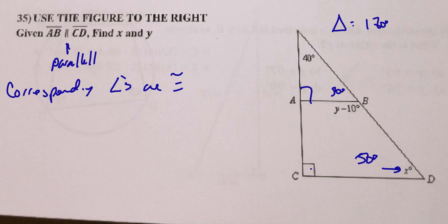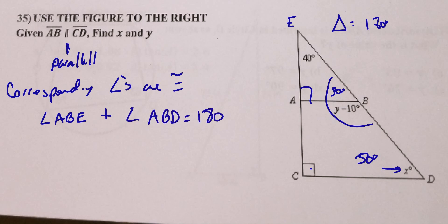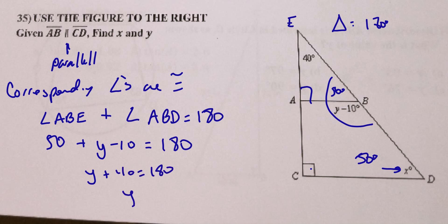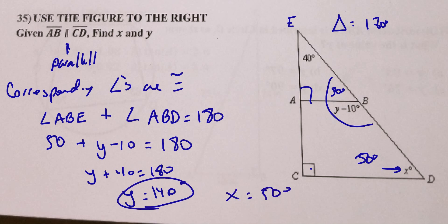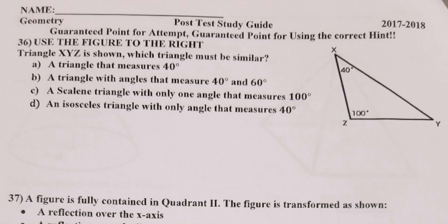Since x = 50, this whole line must equal 180 degrees — it's a linear pair. Angle ABE + angle ABD = 180, so 50 + (y − 10) = 180. Simplify: y + 40 = 180, subtract 40 from both sides: y = 140 degrees. So x = 50 degrees and y = 140 degrees. That's it for number 35.